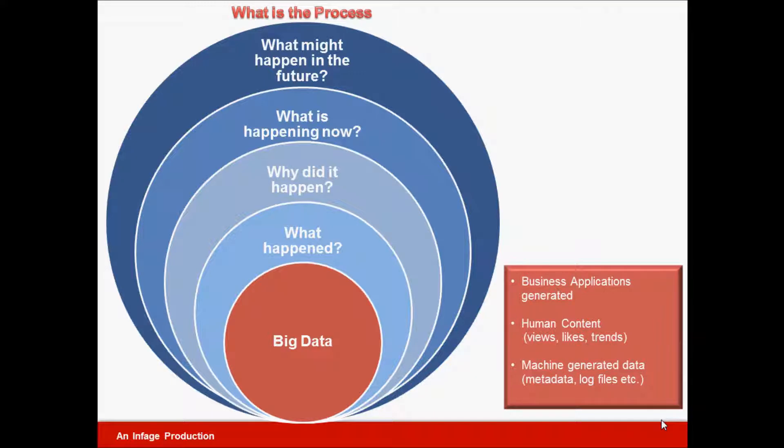Data predominantly comes from three major sources. Data is generated from business applications. We humans generate loads of data in the form of reviews, comments, likes, purchase trends, to name a few. Similarly, there is loads of machine-generated data such as metadata, log files, etc. The first task is to converge all data through the process of extraction, transformation, and loading, or ETL.